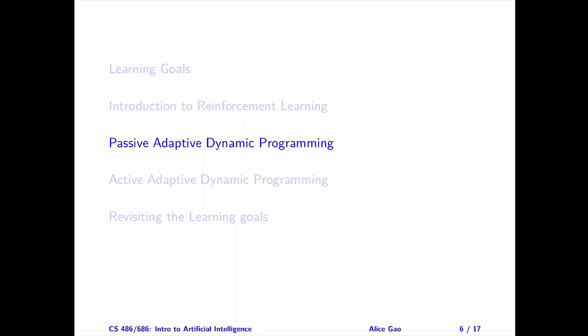That's everything on the passive ADP algorithm for reinforcement learning. Let me summarize. After watching this video, you should be able to describe the basic setting of a reinforcement learning problem and describe the steps of the passive ADP algorithm. Thank you very much for watching. I will see you in the next video. Bye for now.